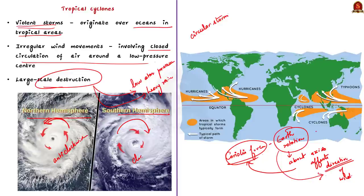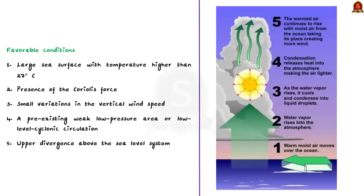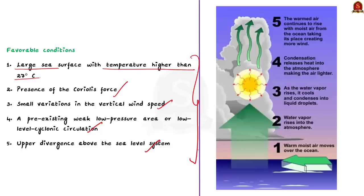Let us move on to see the conditions needed for tropical cyclone formation. First, there should be a large sea surface with temperature higher than 27 degrees Celsius. Second, there should be presence of Coriolis force. Third, there should be small variations in the vertical wind speed. Fourth, there should be a pre-existing weak low pressure area or low level cyclonic circulation. Fifth, there should be upper divergence above the sea level system. Under these favorable conditions, multiple thunderstorms originate over the oceans, merge and create an intense low pressure system — this is how a tropical cyclone originates.